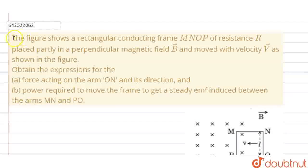Hello everyone, let's solve the question. The question says that the figure shows a rectangular conducting frame MNOP of resistance R placed partly in a perpendicular magnetic field B and moved with velocity V as shown in the figure.